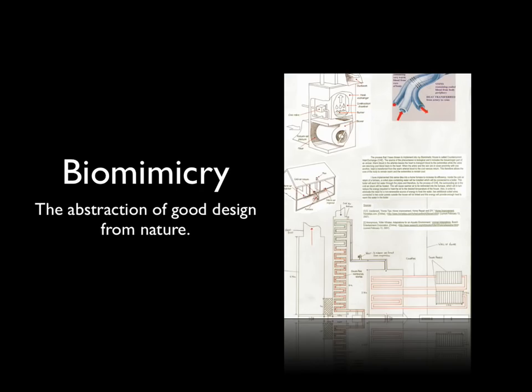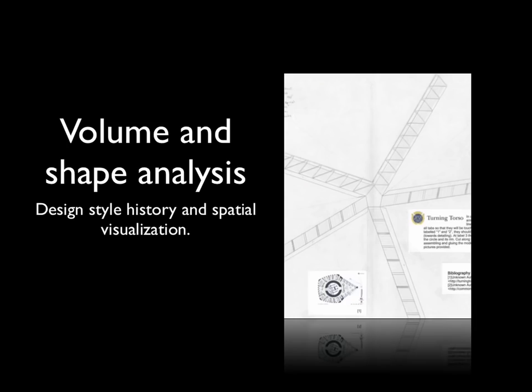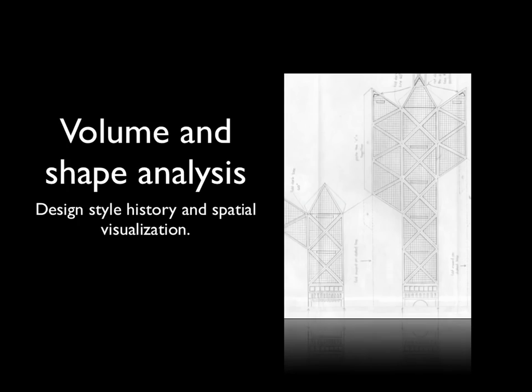Biomimicry is an assignment done on a yearly basis where students are asked to come up with ideas abstracted from things that occur in nature. This student looked at blood flow in veins and heat exchange and used the idea for a system in a house. We have many different drawing assignments that we rotate on a year-to-year basis. In this assignment, students were asked to look at their favorite piece of architecture and unwrap the building. So if you were to cut this out and glue it back together, you would get back to Calatrava's Turning Torso in Malmö, Sweden — a very complex and beautiful example of one of the students' favorite buildings.